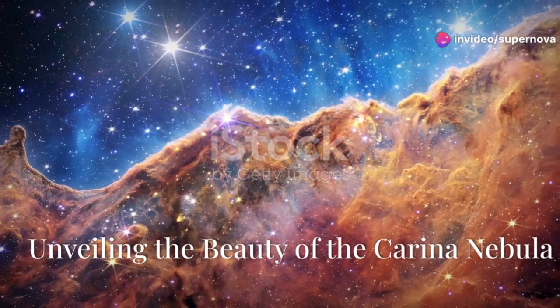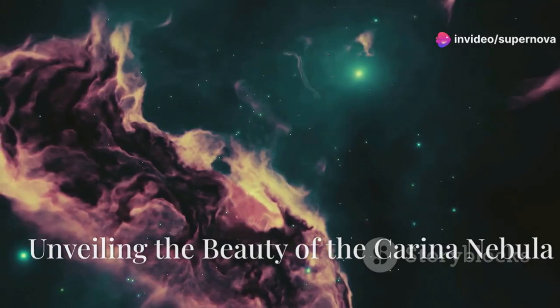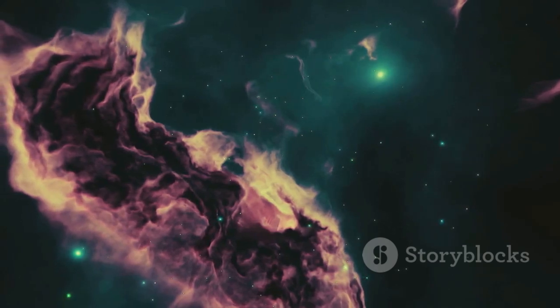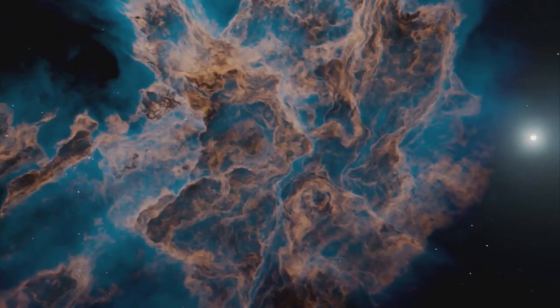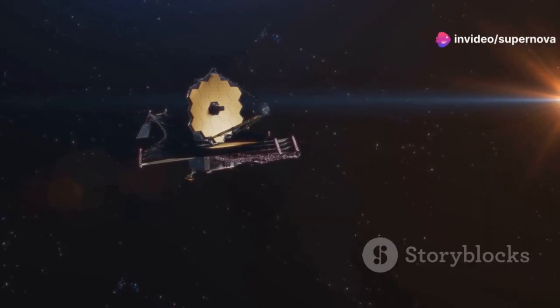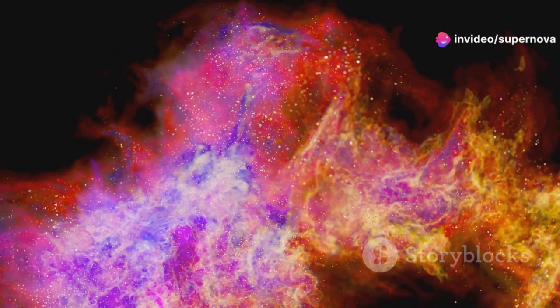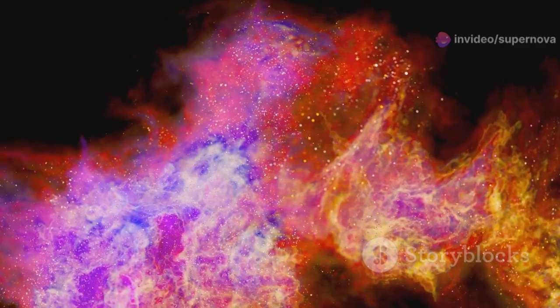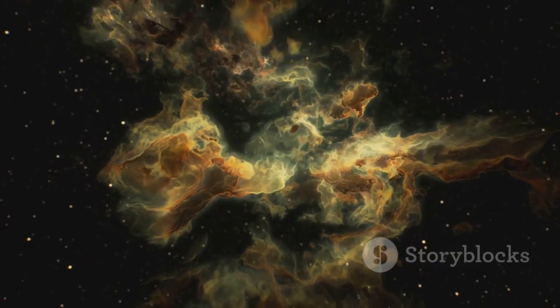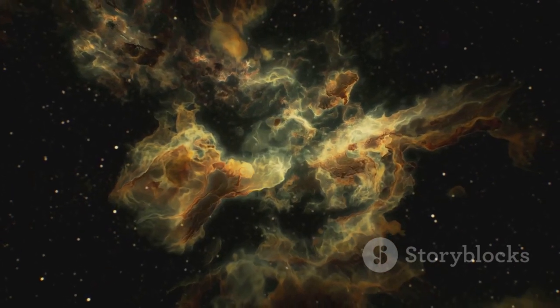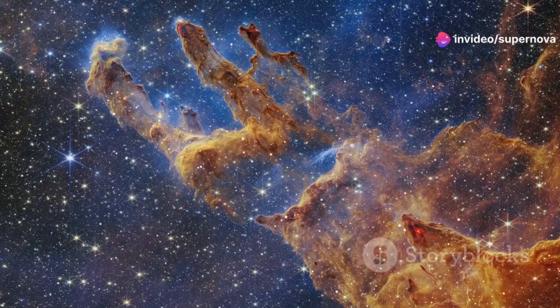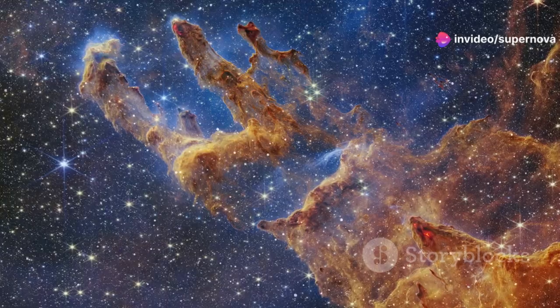The Carina Nebula, a vast cloud of gas and dust. It's a stellar nursery where stars are born. Hubble gave us stunning images of the Carina Nebula, but JWST's images are breathtaking. JWST's infrared vision allows it to see through the dust. It reveals the nebula's hidden structures. We see stars forming, jets of gas erupting from young stars, the intricate details of the nebula's structure.